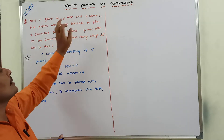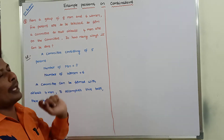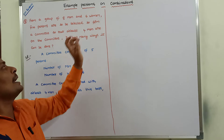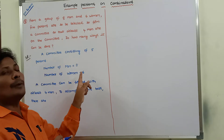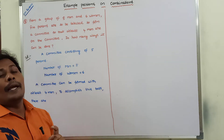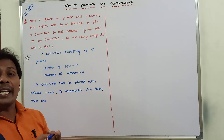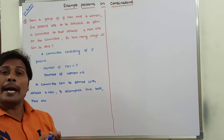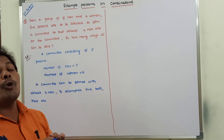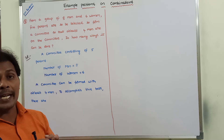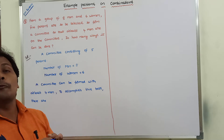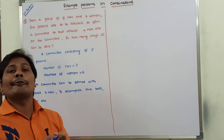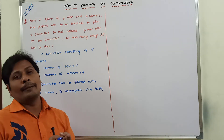The number of men is equal to eight and the number of women is equal to six. A committee can be formed with five persons. We need to find how many ways to form a committee with at least four men.